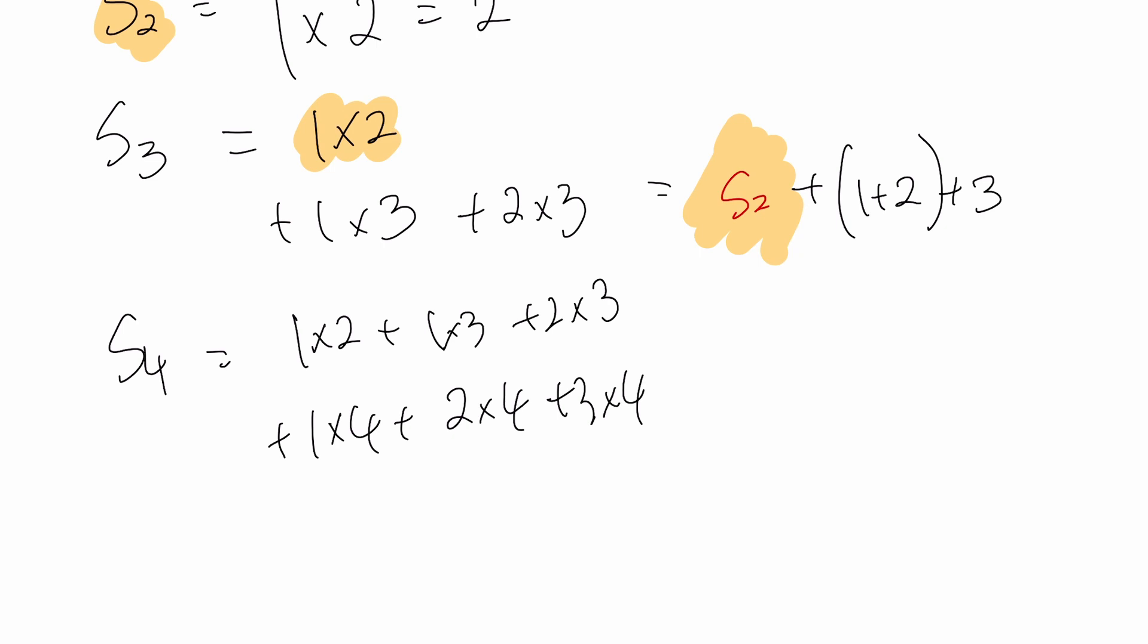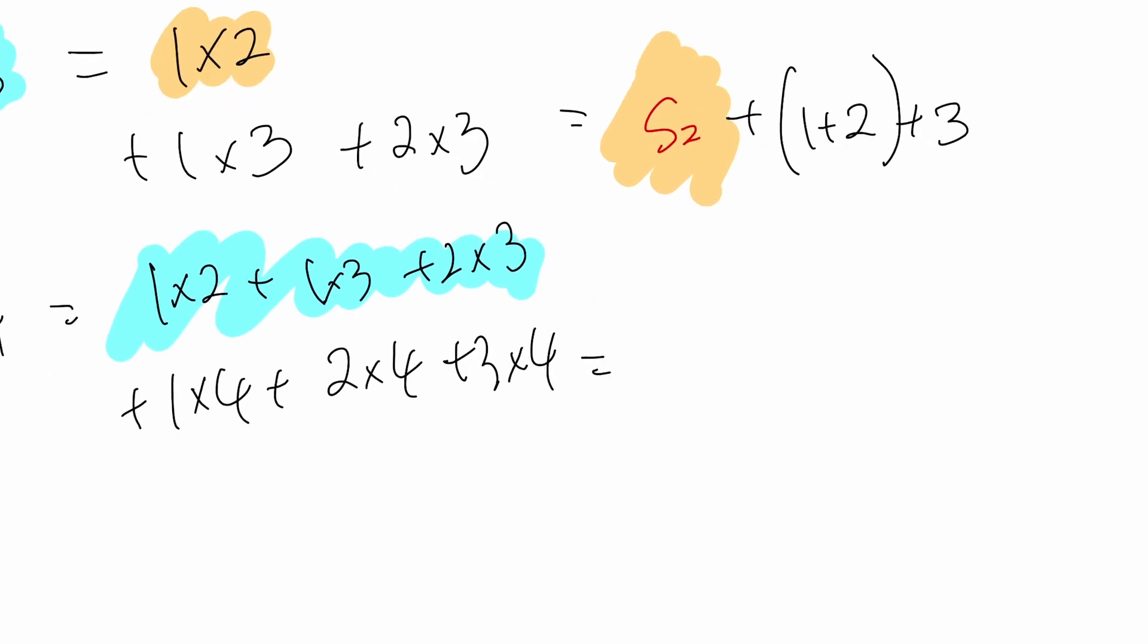In this case, we would have S_3, this whole thing is S_3, and now we group this. We would get, leaving space for S_3, we group and get (1 + 2 + 3) times 4. Well, that's times 3 over here.